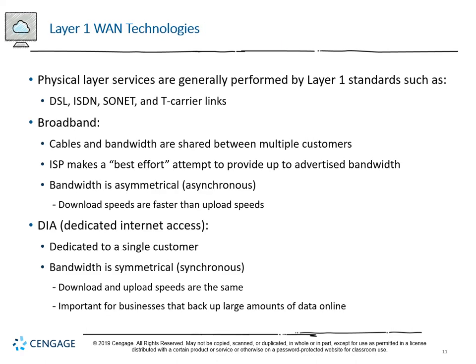Layer 1 WAN technologies, also called physical layer, are traditionally things like DSL, ISDN, SONET, and T-Carrier. Broadband is the concept of taking multiple services over a single physical conduit. In a broadband WAN, cables and bandwidth are shared between multiple customers, and the ISP will make a best effort attempt to provide up to the advertised bandwidth. You'll want to occasionally run a speed test because there's surprising variation even a few minutes apart, because we have a distributed asymmetrical system. Asymmetrical means the balance between upload and download is not equal - download speeds are often faster than upload speeds.